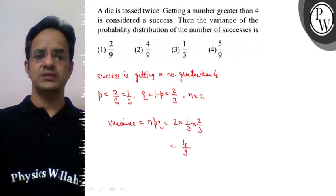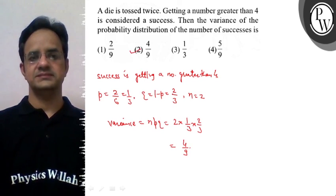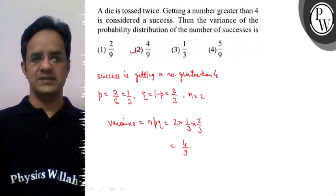So the final answer to this problem is that the variance is 4 by 9. So option 2 is the correct option. Hope you understood it well. Best of luck.